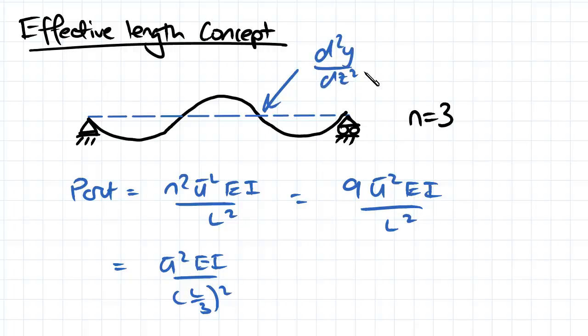So d squared y, dz squared is equal to zero at that point. And this length here is L over 3 because we've got a total length of L.